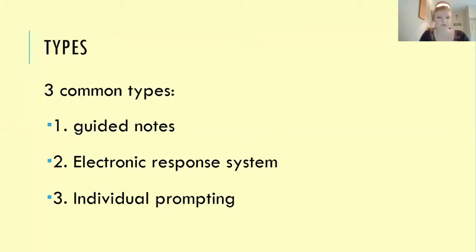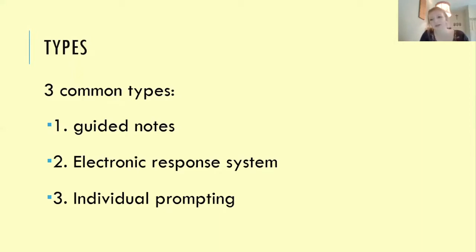There are three types of opportunities to respond. The first is guided notes, where the teacher gives a handout so the student can follow along and has standard cues for when to respond. The second is electronic response systems — a remote system where students respond simultaneously without being projected publicly, like answering questions through an online chat without being seen in the classroom.